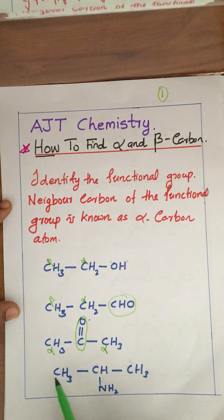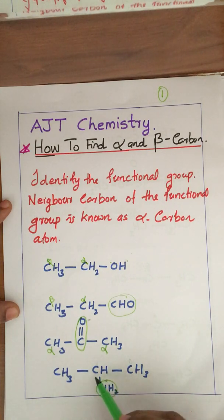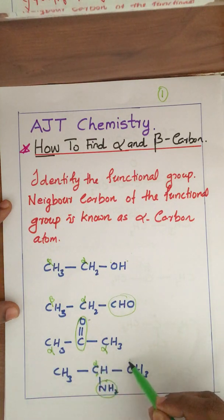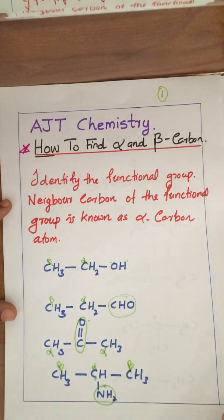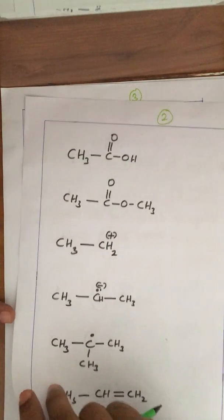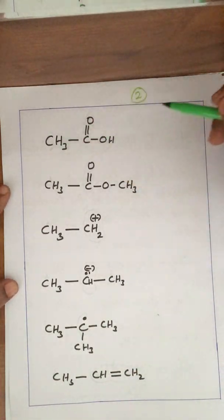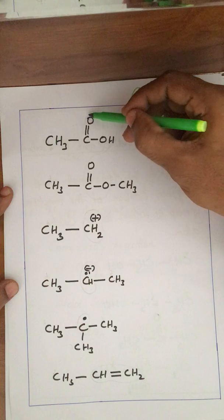This molecule is an amine, therefore NH2 is the most important group. The carbon attached to this most important group is the alpha carbon atom, and the next carbon is the beta carbon. Similarly, look at this carboxylic acid molecule — the COOH group is the most important group in this molecule.